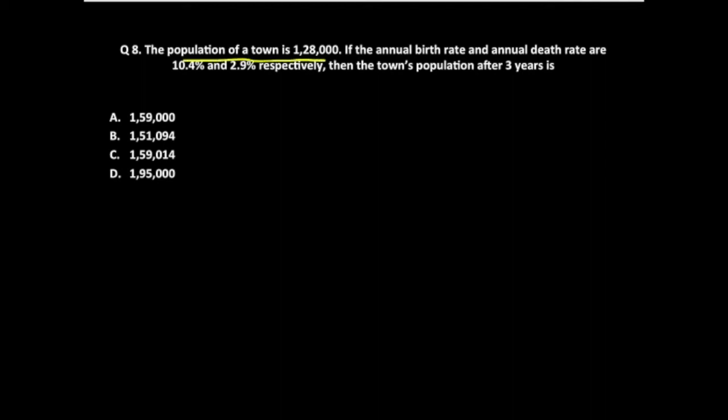A population of a town is 1,28,000. The annual birth rate and annual death rate are 10.4% and 2.9% respectively. Then what is the town's population after three years? Birth rate and death rate of this town are happening simultaneously.